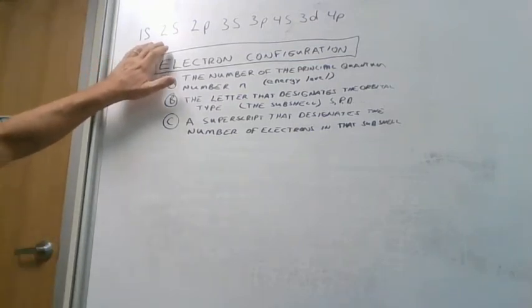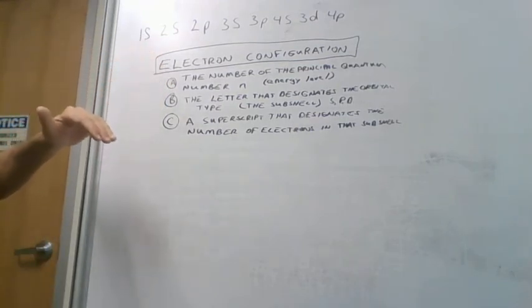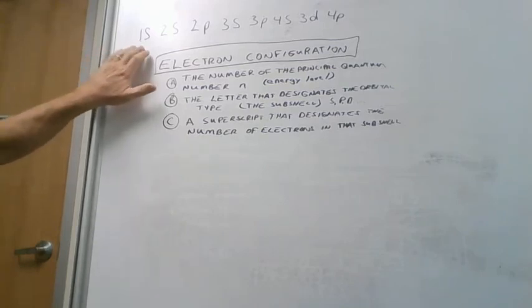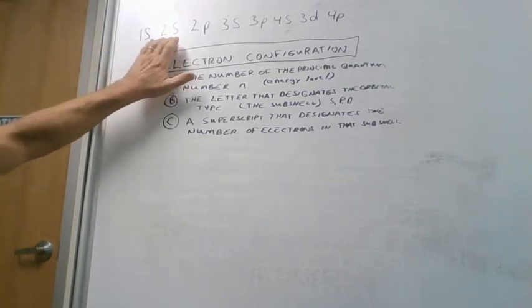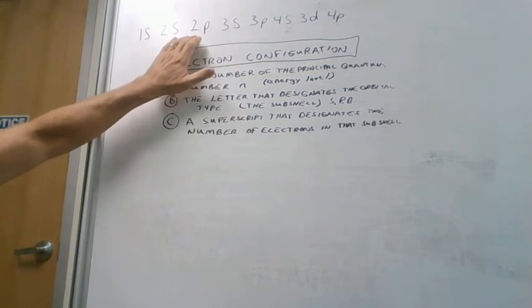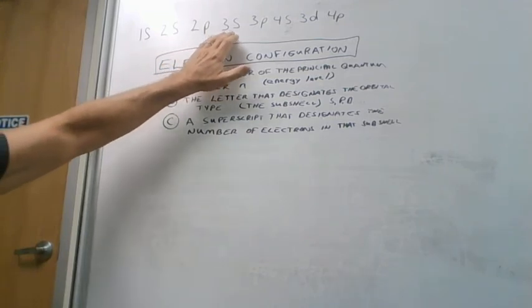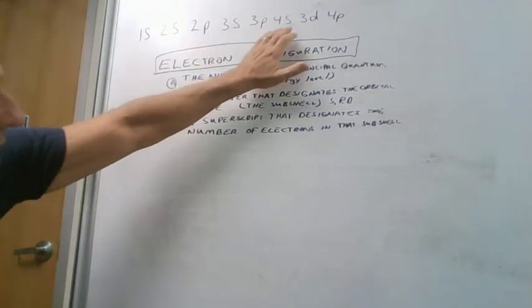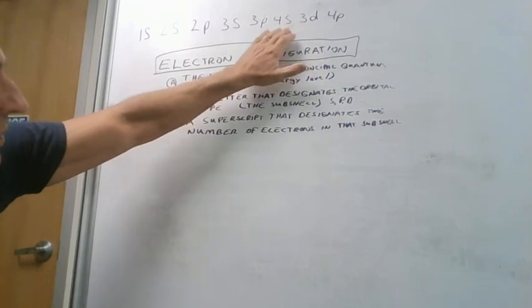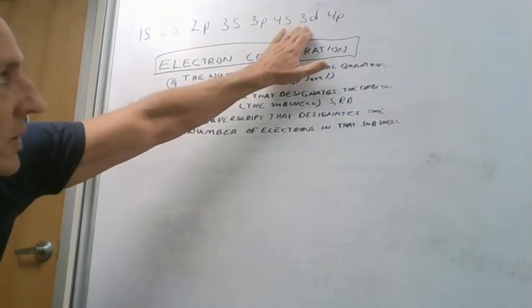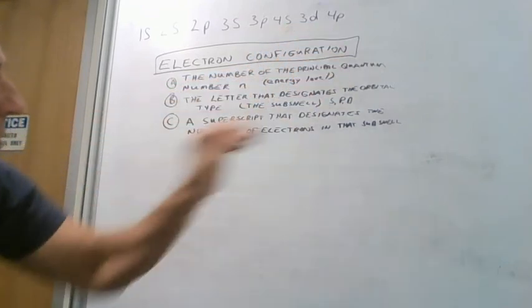The way that the orbitals are set up is the 1s is the lowest energy, then the 2s, then the 2p. Then we get to the third energy level. We have the 3s and the 3p and the 3d. It turns out that the 4s energy level is slightly below the 3d, and then we go to the 4p.